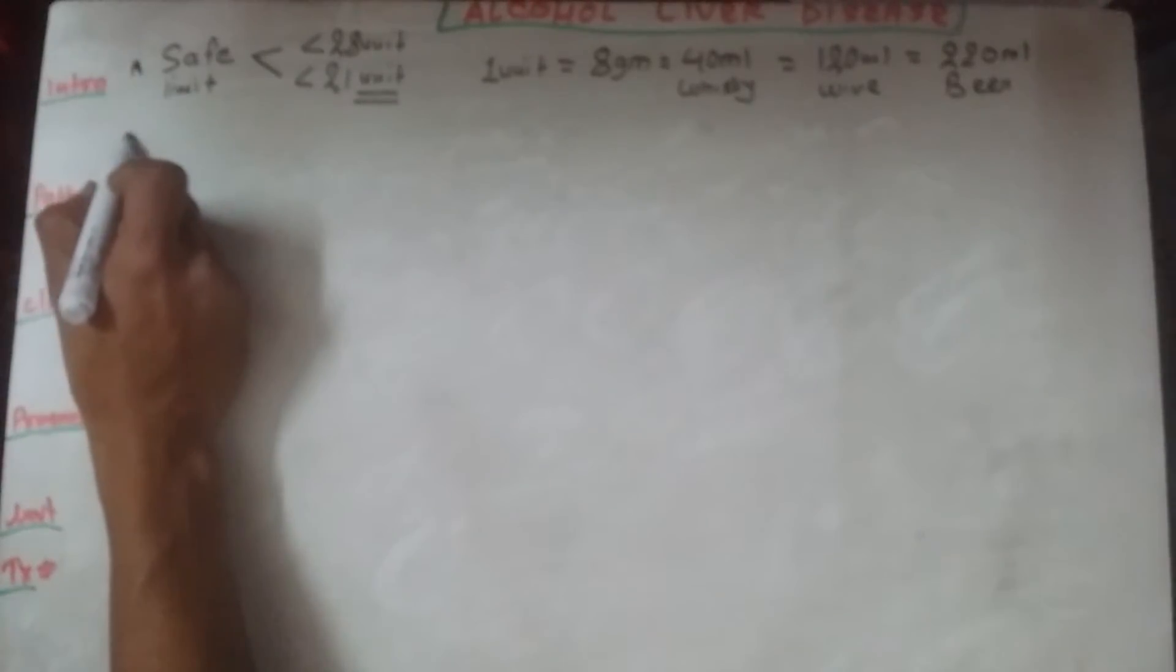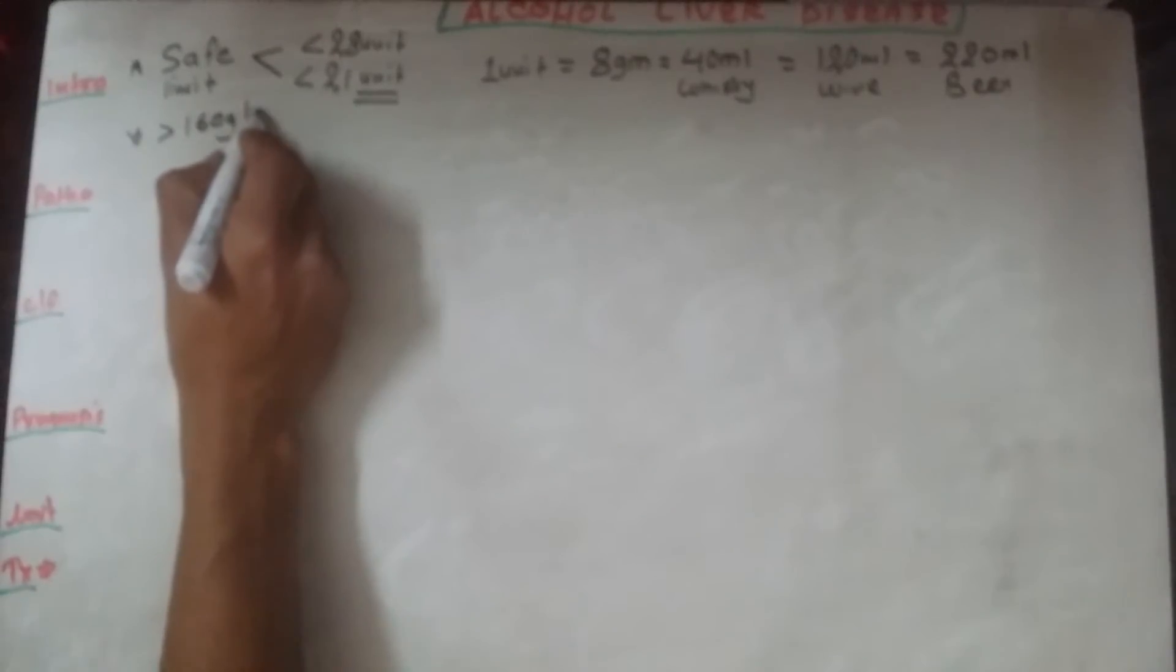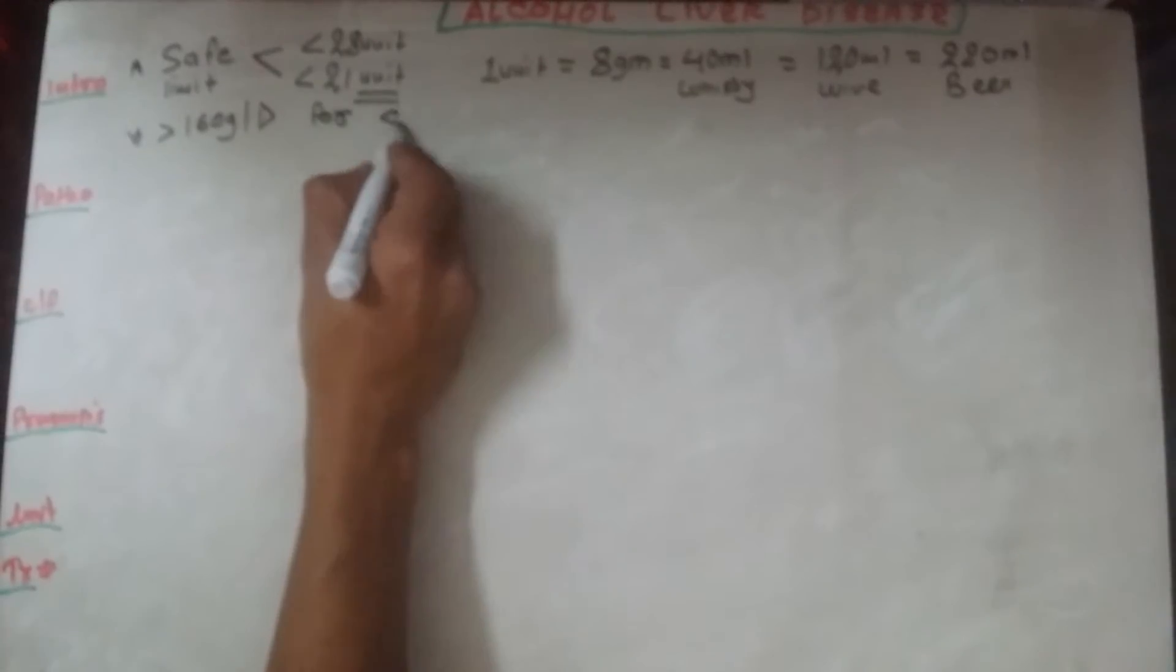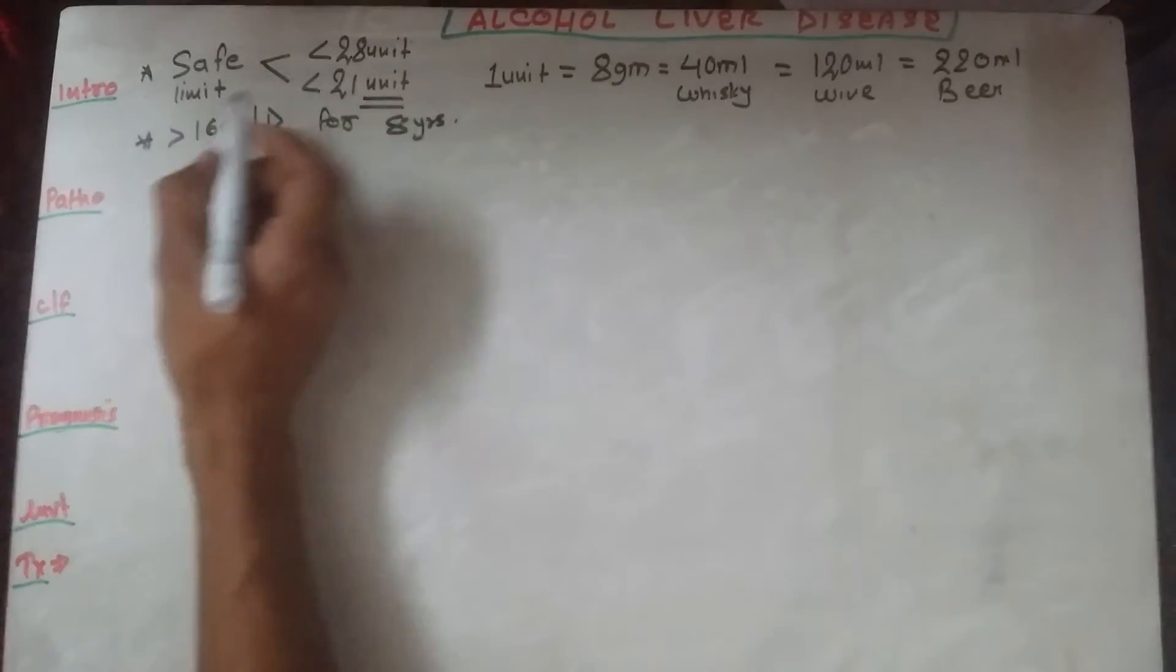One more point should be remembered: if a person is consuming 160 grams of alcohol per day for 8 years, it will increase the risk of cirrhosis.